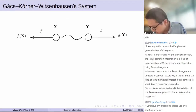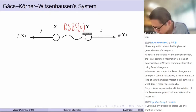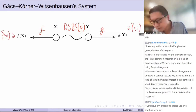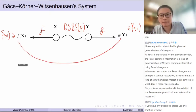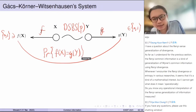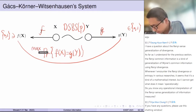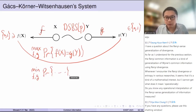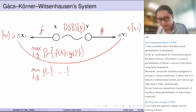What is this problem? You have X and Y related, for example, by a DSBS with crossover probability, and you would like to design two functions f and g to create two random bits. These are only bits — they are in {0,1} — and you hope that these two agree. You want to assess this: the max over f and g, and you may also want to control the minimum of the same probability.